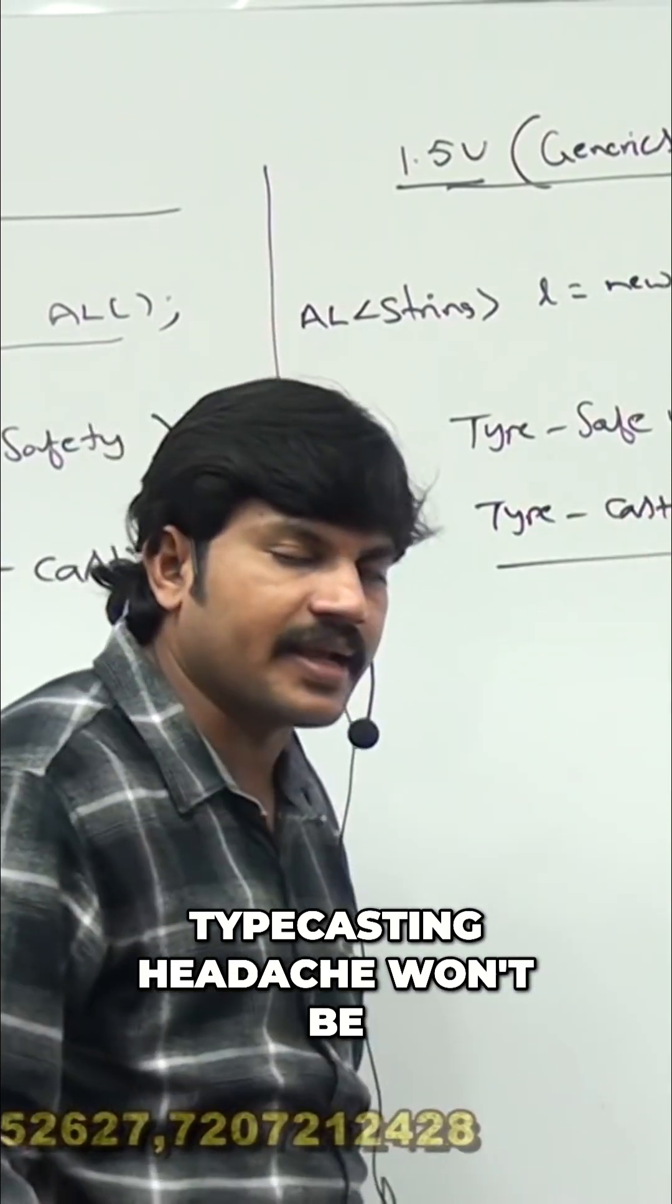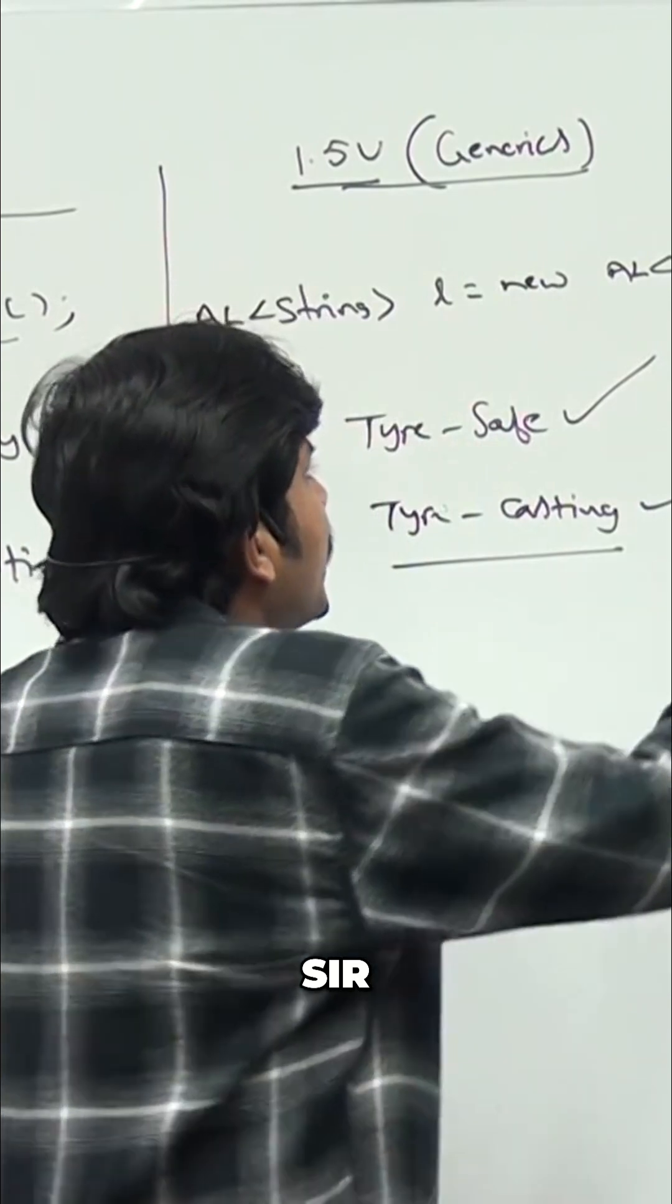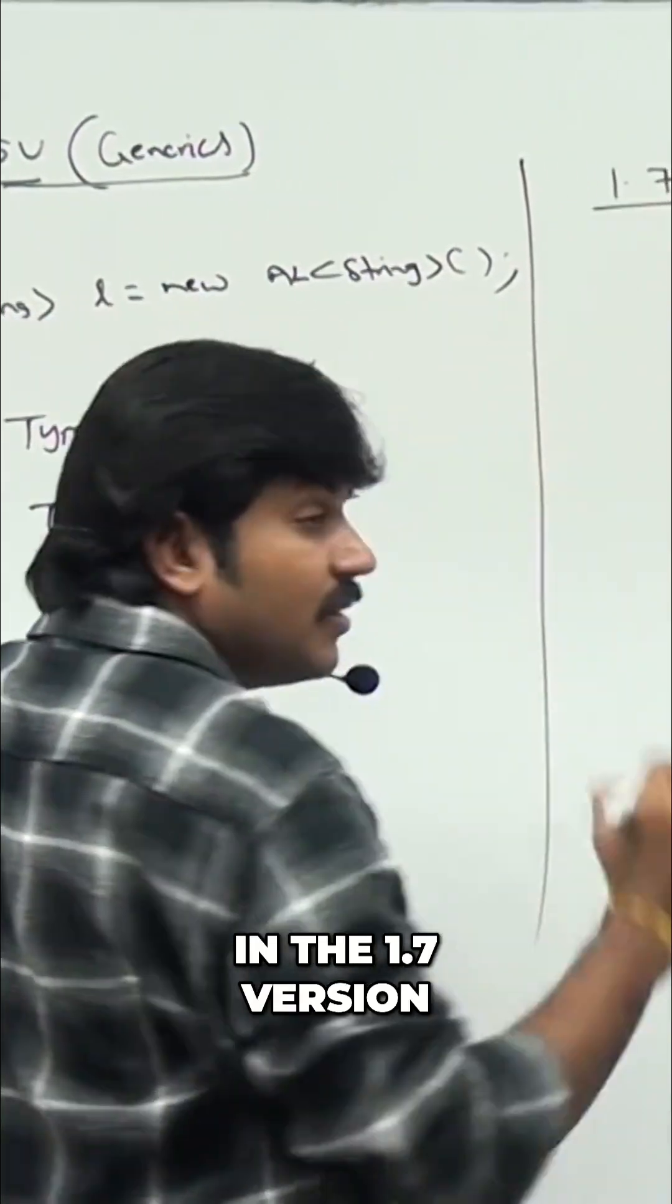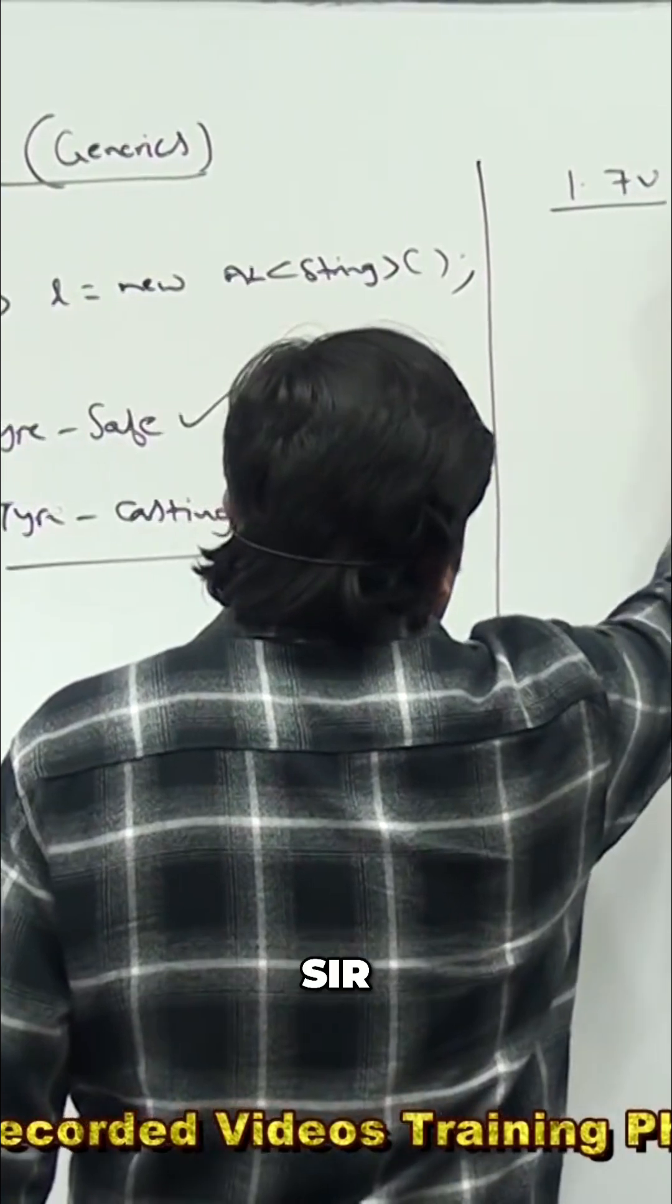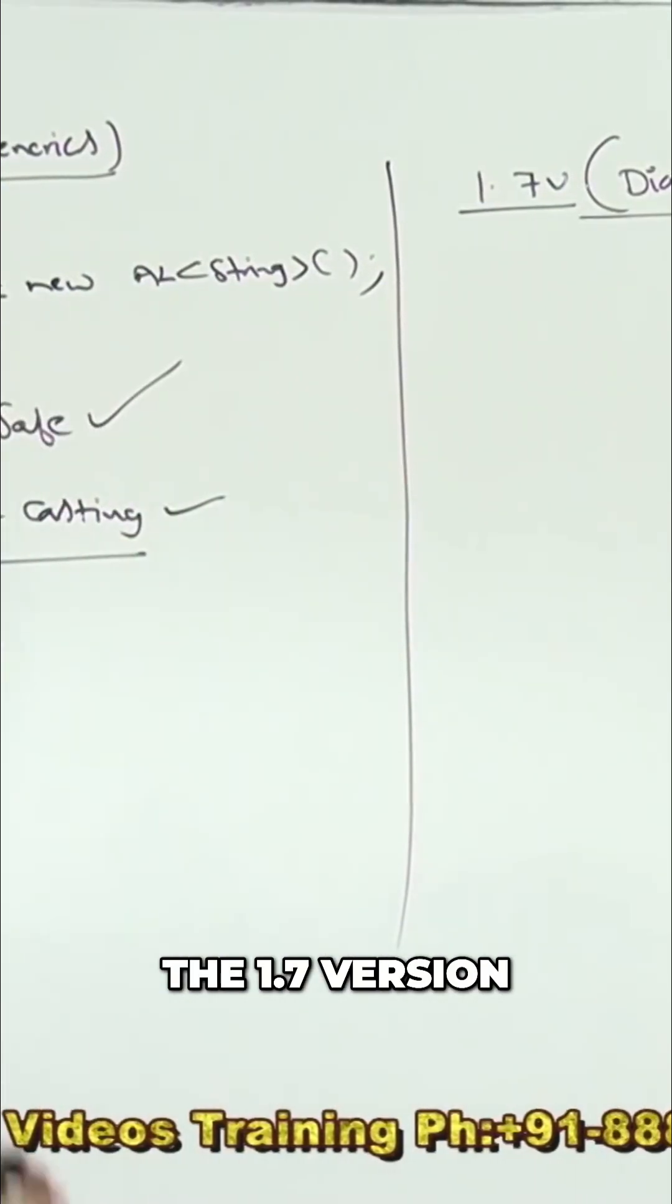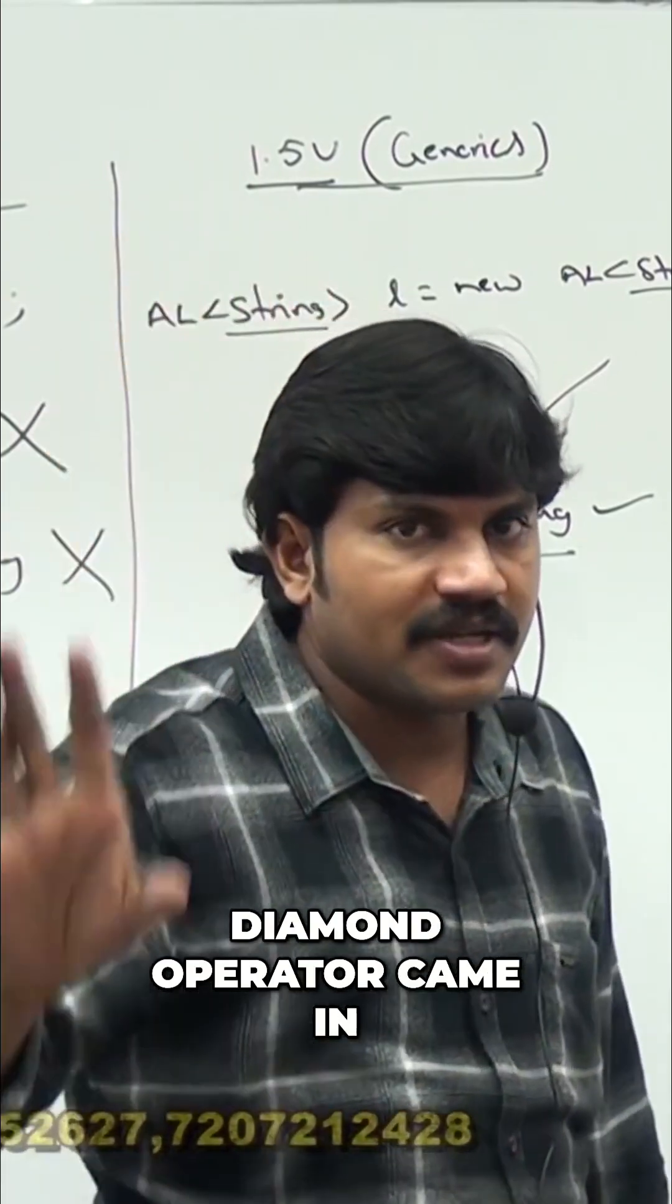In the 1.7 version diamond operator came to provide this flexibility. We are not required to repeat type parameter second time.